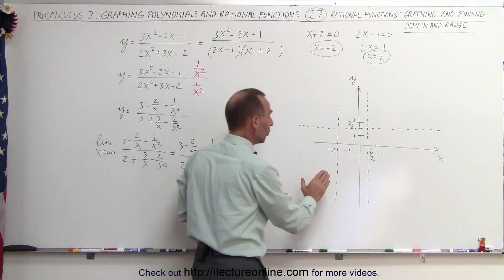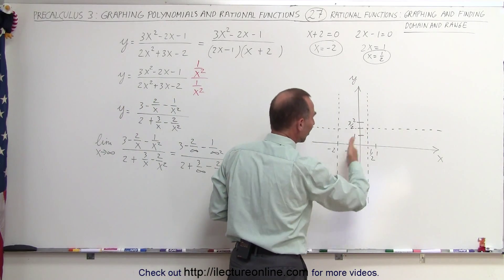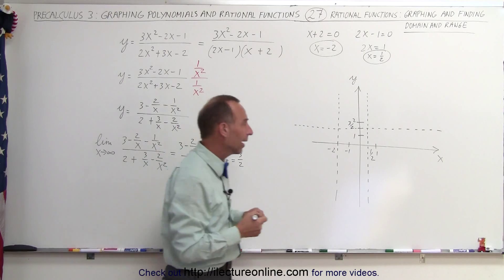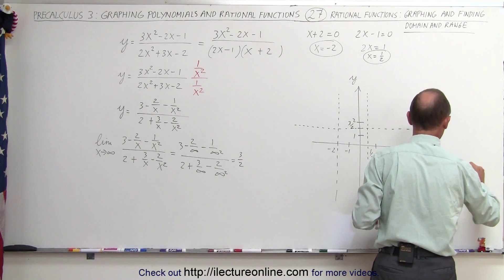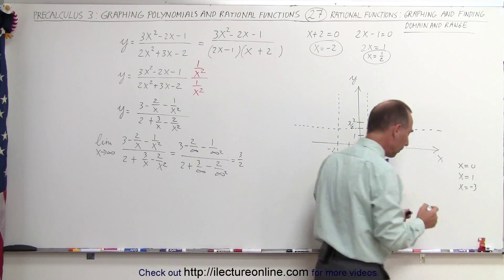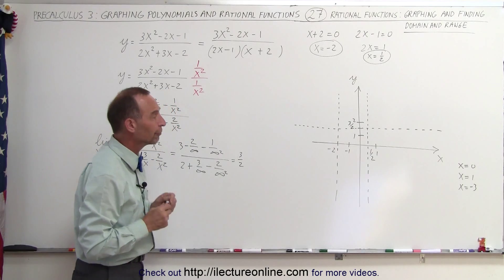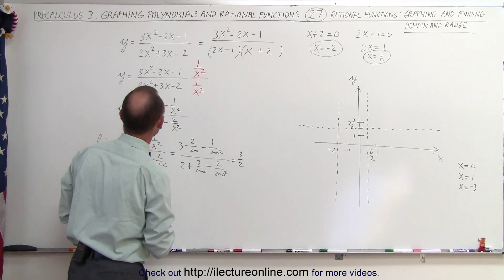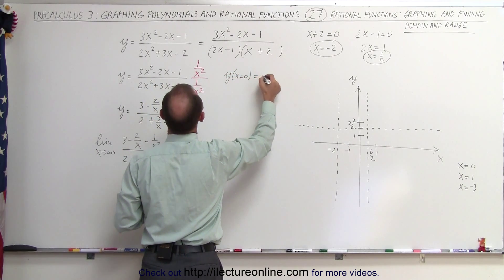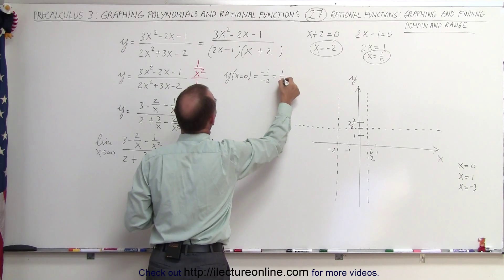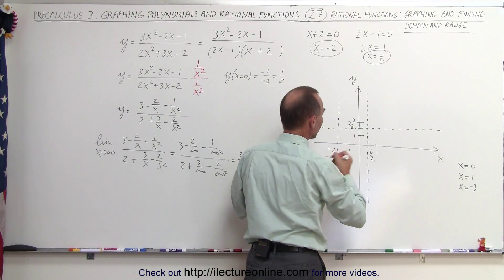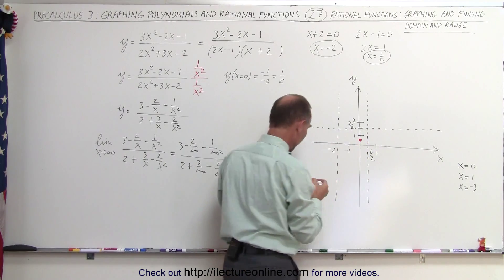We have three regions separated by those two vertical asymptotes, so we're going to try some test points on either side. We can try x equals 0, x equals 1, and x equals negative 3. When x equals 0, y equals negative 1 over negative 2, which equals 1 half. So when x equals 0, y is 1 half — that's this point right there. Let's find another test point: x equals 1. When x equals 1, that gives us 3 minus 2 minus 1 divided by 2 plus 3 minus 2, which is 0 over 3, or 0. So when x equals 1, y is 0.